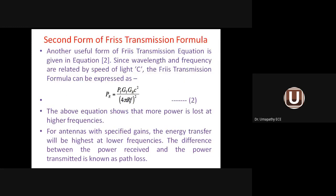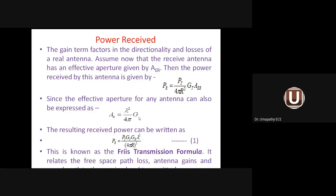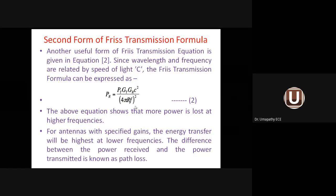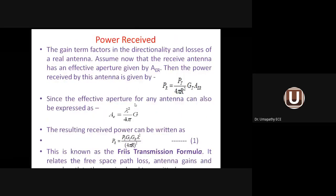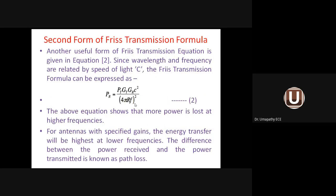The second form of the Friis transmission formula involves the velocity of light. Since λ = c/f (where c = 3×10⁸ m/s), substituting λ gives: P_r = P_t × G_t × G_r × (c / 4πRf)². This is the second form, involving velocity of light and frequency rather than wavelength.